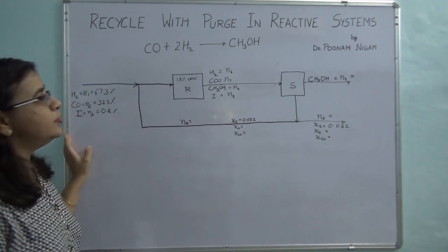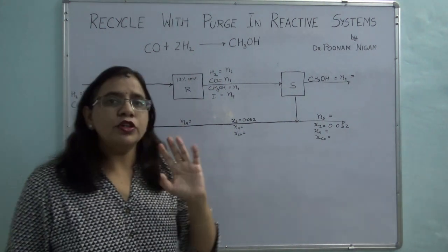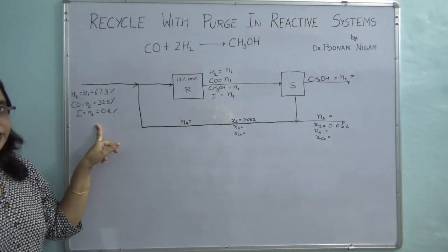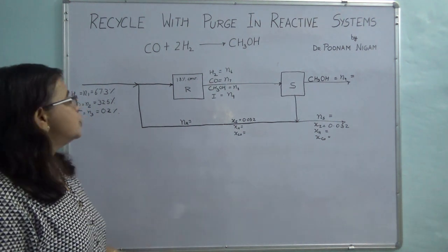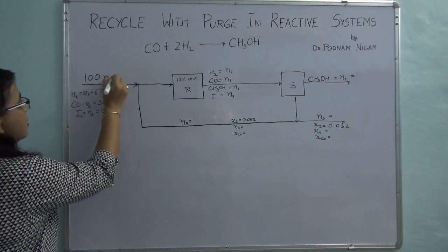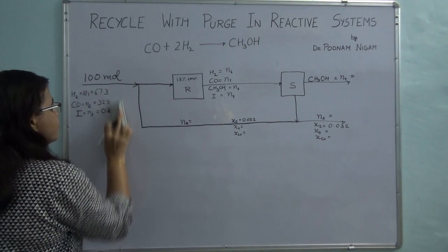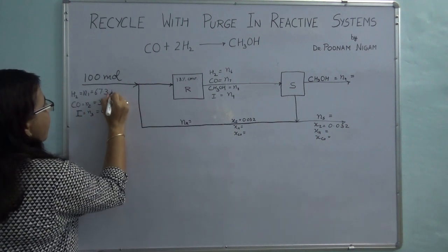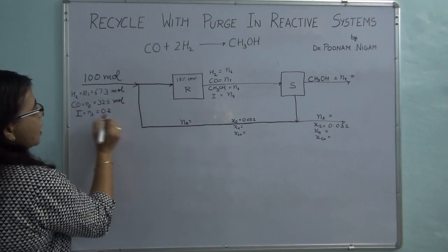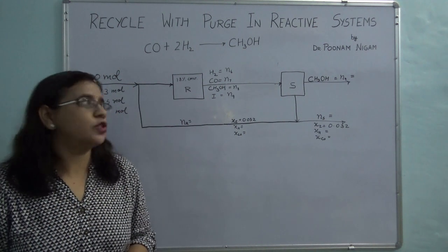I have drawn a fully labeled flow chart. The first step is to select the basis. The only stream for which we know the full composition is the fresh feed stream, so we take 100 moles of it. This lets us write the percentages directly as moles: 67.3 moles of hydrogen, 32.5 moles of carbon monoxide, and 0.2 moles of inert.